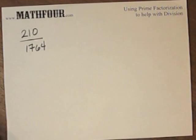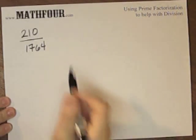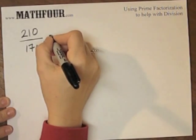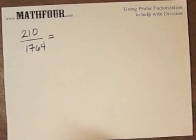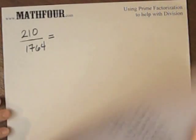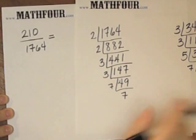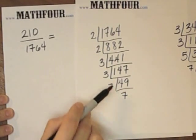We're talking about using prime factorization to help with division using the example 210 over 1764. I've previously factored 1764 and I see that it's 2 times 2 times 3 times 3 times 7.